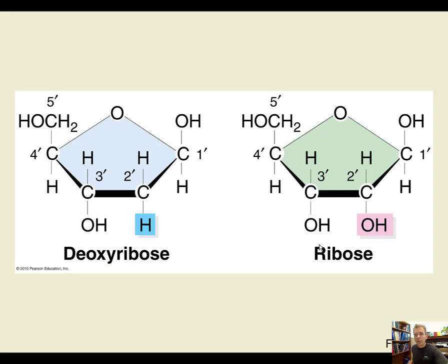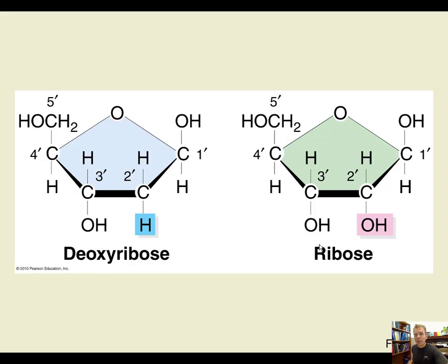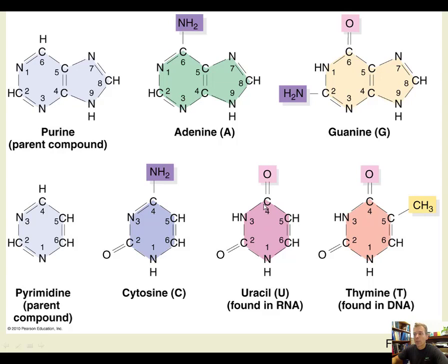The nitrogenous base comes in two flavors: purines, which are double ring structures, and pyrimidines, which are single ring. Purines are numbered 1 through 9 and pyrimidines 1 through 6. The purines are adenine and guanine — very similar ring structures but different side groups. Adenine has an NH2 amine group; guanine has a carbonyl at position 6 and an amine at position 2. Pyrimidines include cytosine — with an amine group — uracil found in RNA only with a carbonyl, and thymine which has a carbonyl plus a CH3 methyl group.